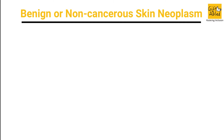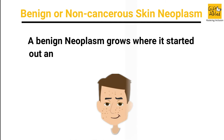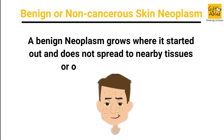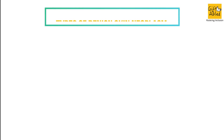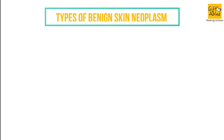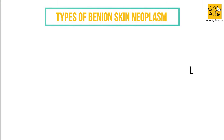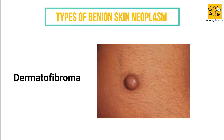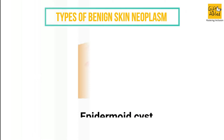Benign or non-cancerous Skin Neoplasm. A Benign Neoplasm grows where it starts out and does not spread to nearby tissues or other parts of the body. Types of Benign Skin Neoplasm include Skin Dermoid Cyst.